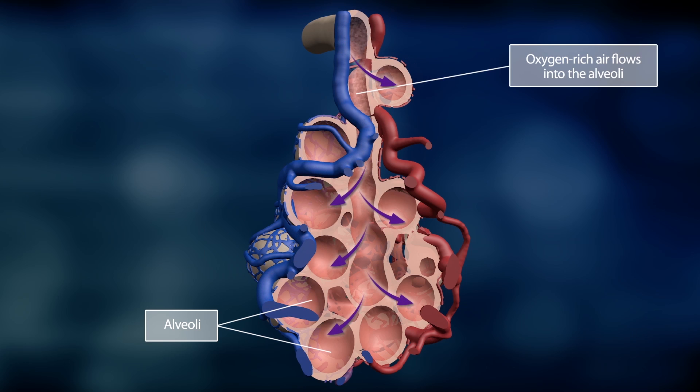When we inhale, air flows down into the bronchial tubes and all the way to the alveoli. The inhaled air is oxygen rich.